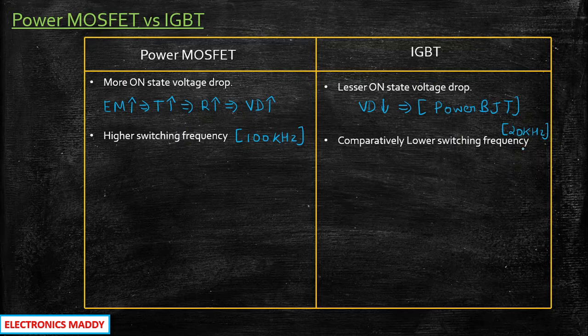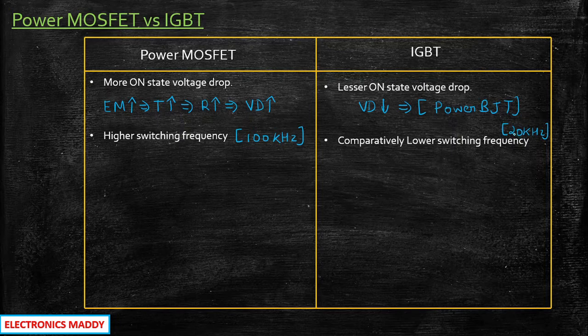The reason why IGBT is used for lower switching frequency is because it has some of the properties of power BJT. Since BJT is used for low frequency applications, IGBT is also comparatively used for lower frequency applications.